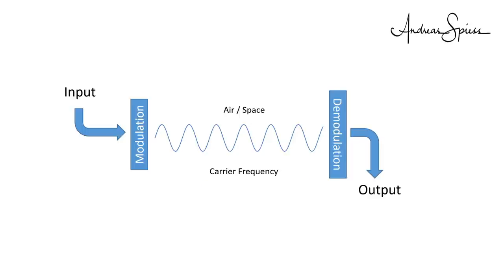If we add an antenna on both sides, we have a typical wireless system. The transmitter emits a specific power, and the receiver needs a minimal signal to demodulate it. The difference between the two is called link budget. With this budget, you have to pay for the losses in cables, antennas, and in the space between the antennas, including obstacles. By the way, if you do it right, antennas can have gain instead of losses.